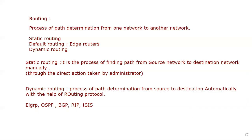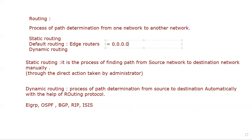Default routing came from static routing. Default routing works on edge routers, and in default routing there is an address reserved: 0.0.0.0 — that address will be reserved for default routing.